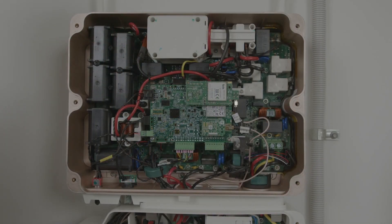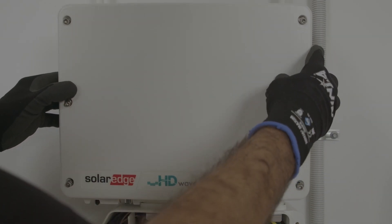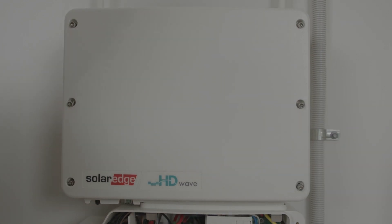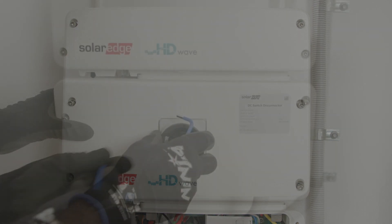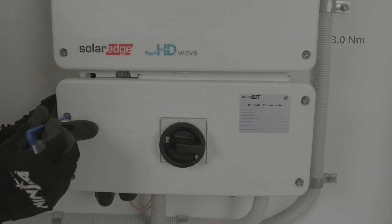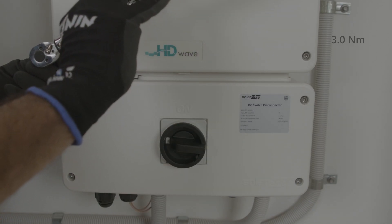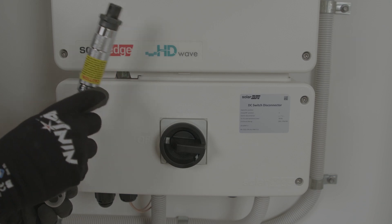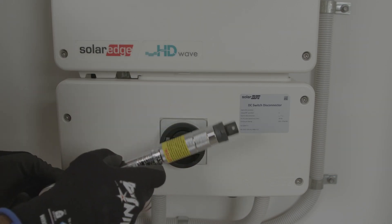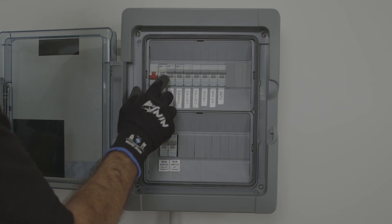Simply replace the covers. That concludes the wiring for the SolarEdge Energy Hub inverter.